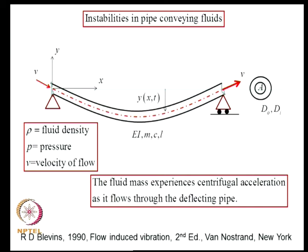Before leaving the subject of structural stability analysis, we consider another interesting problem: vibration of a pipe conveying fluid. A fluid moves in this pipe with velocity V; the pipe cross-section has flow area A, outer and inner diameters are given, fluid density is rho, P is the pressure, and V is the velocity of flow.